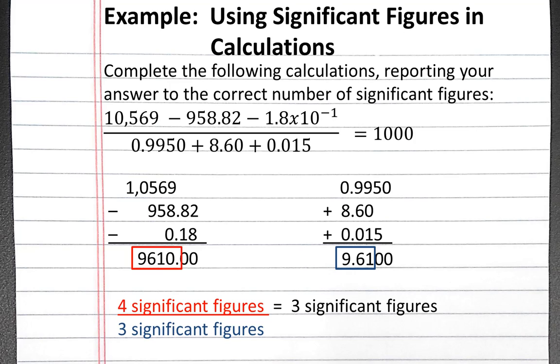In this case, we'll move the decimal place to the left once, twice, three times, so that our answer should be 1.00 times 10 to the third.